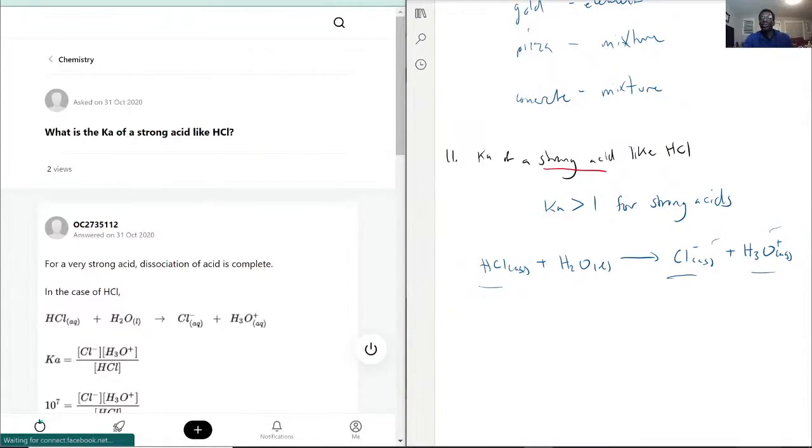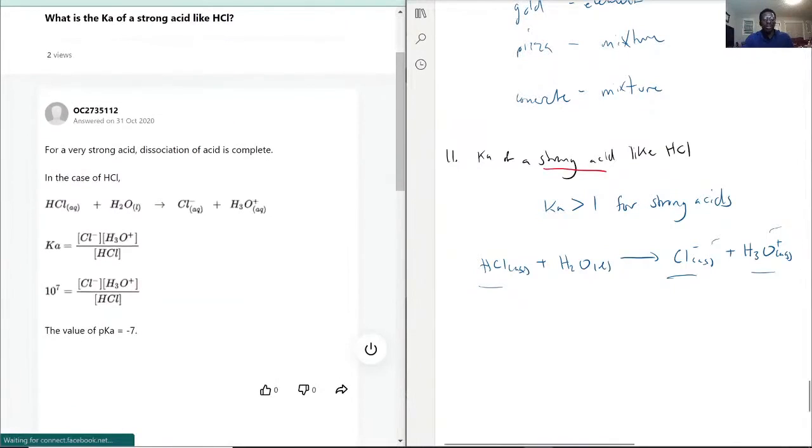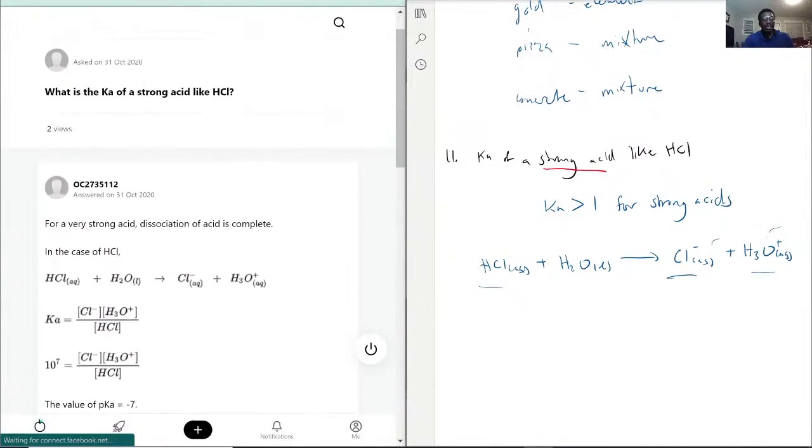You pour some hydrochloric acid into water, it dissociates. You start out with one mole per liter of hydrochloric acid - bam - you have one mole per liter of chlorine ions and one mole per liter of hydrogen ions.